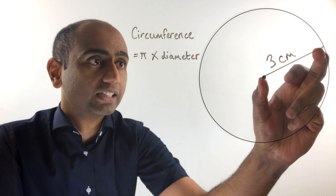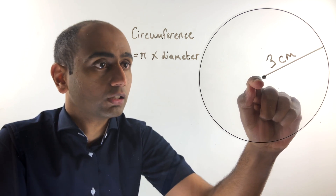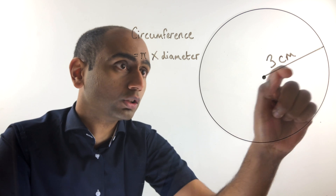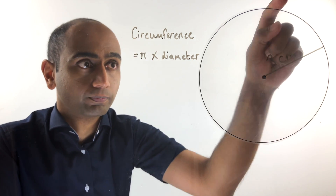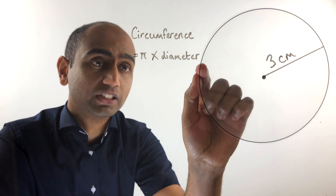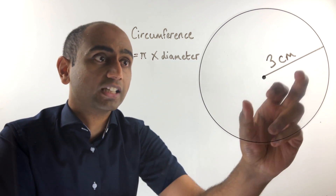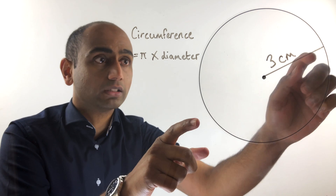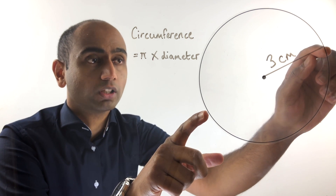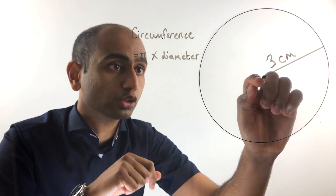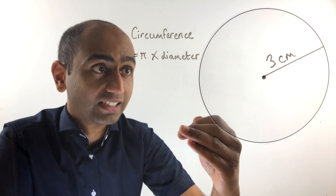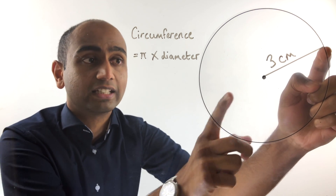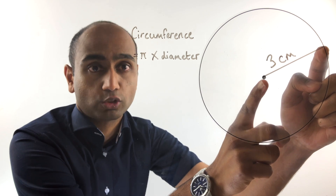Next you need to know what a radius is. The radius is the distance from the center of the circle to the circumference. You also need to know what diameter means. The diameter is twice the radius — it is simply the distance between two points on the circle joined by a line that goes through the center. In this case the diameter would be six centimeters, which is double the radius of three centimeters.